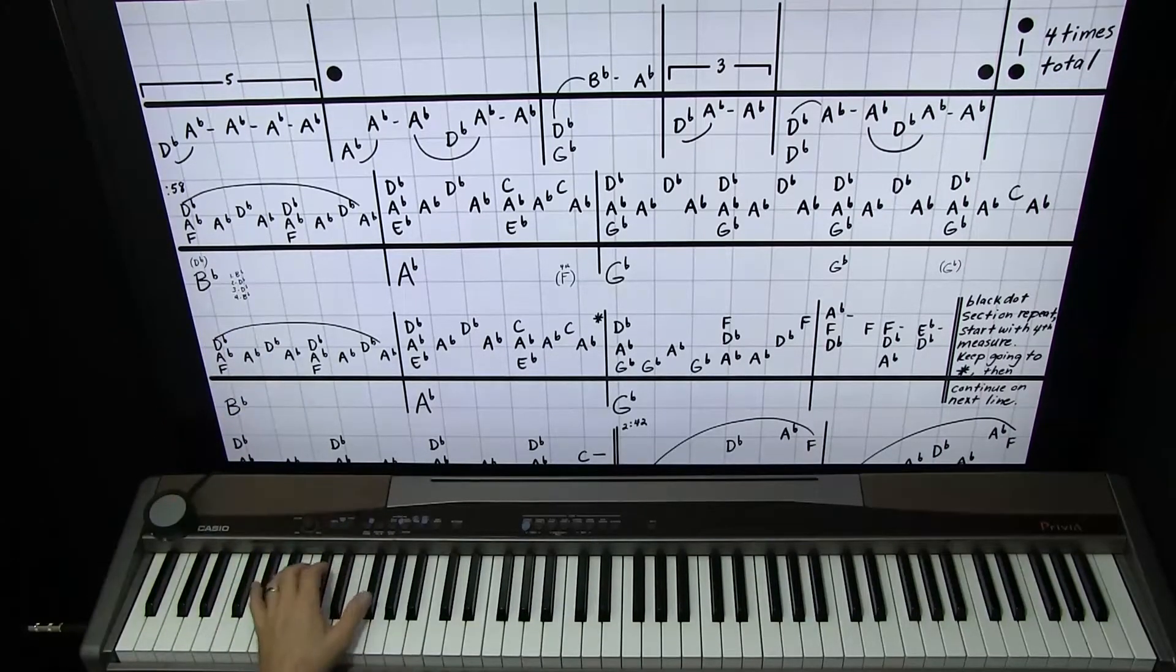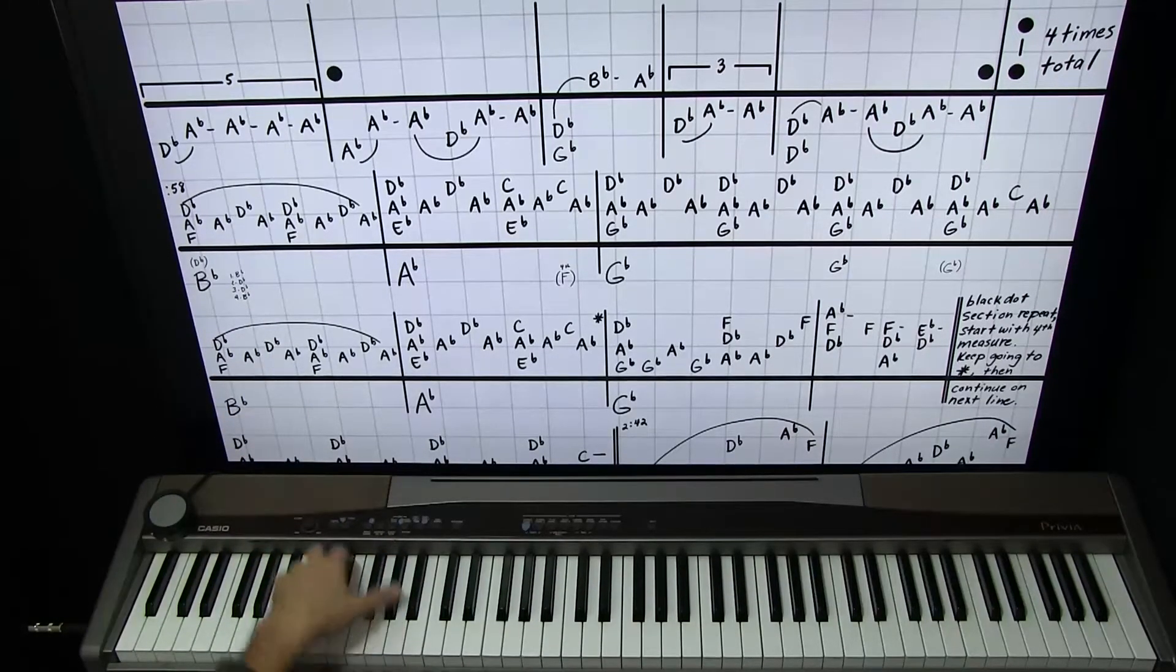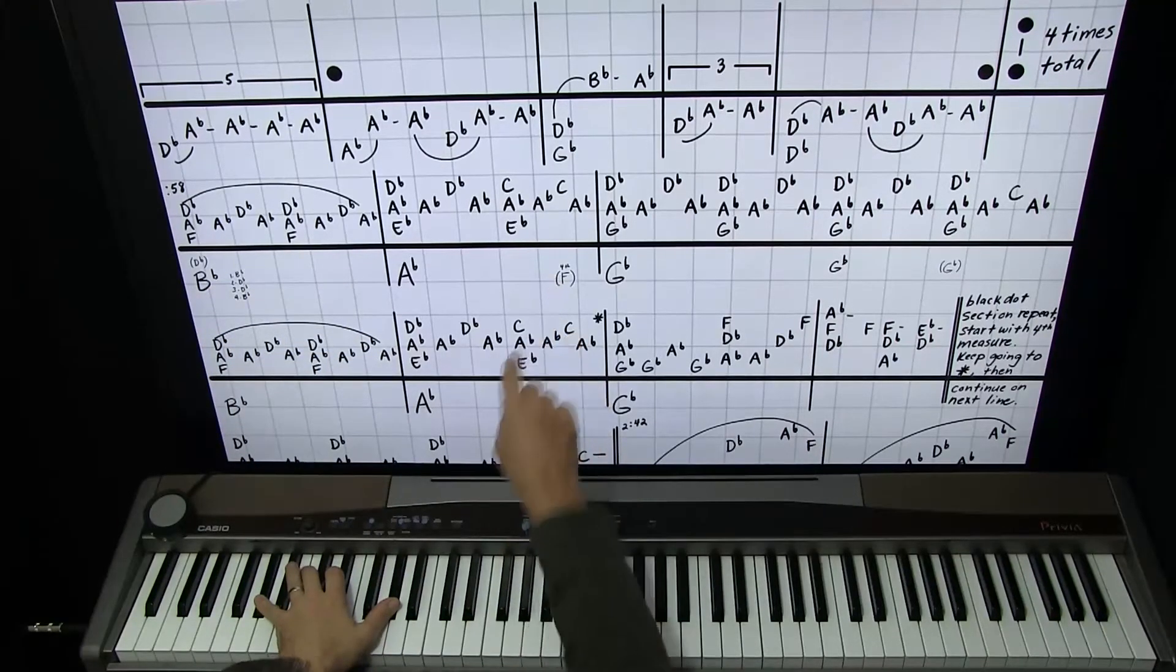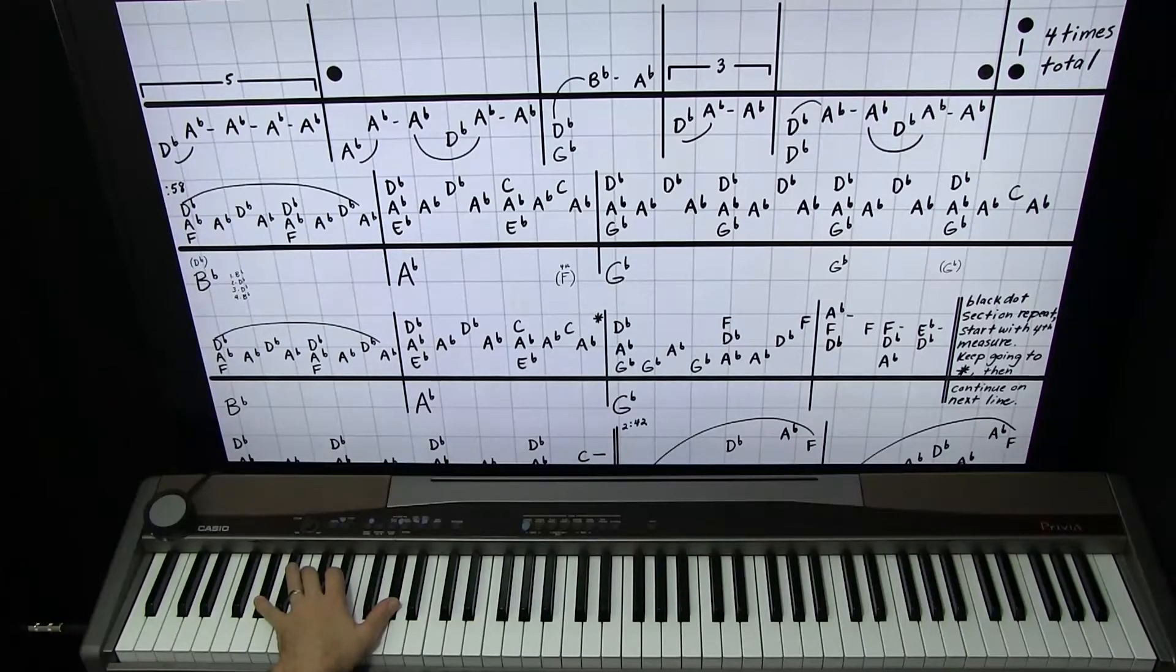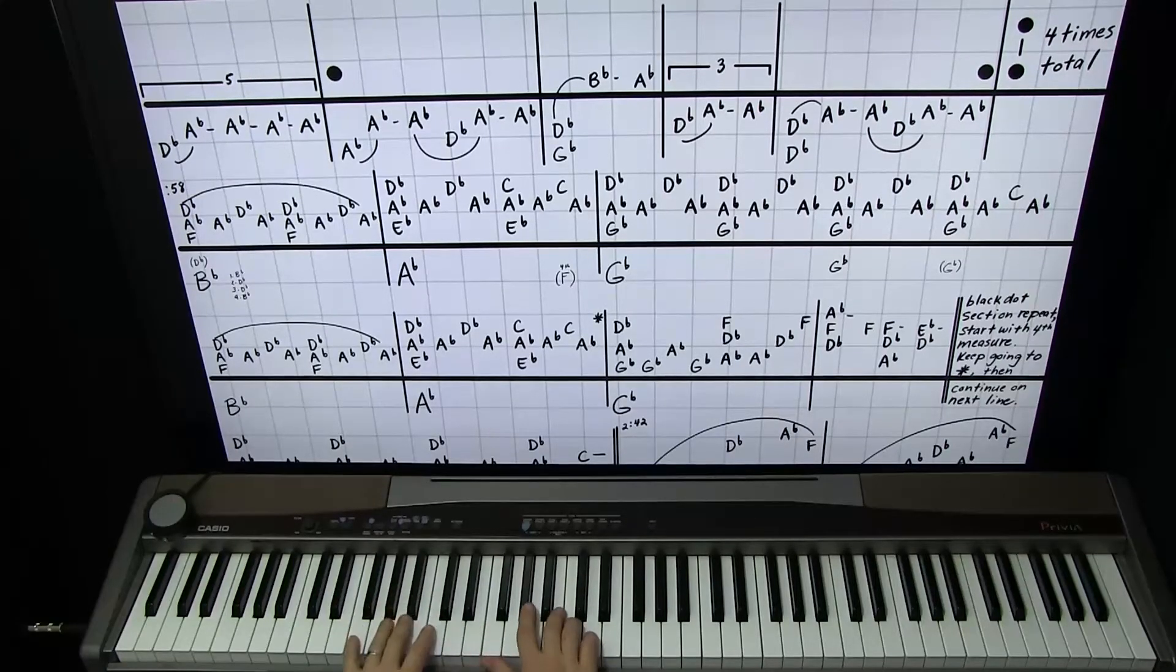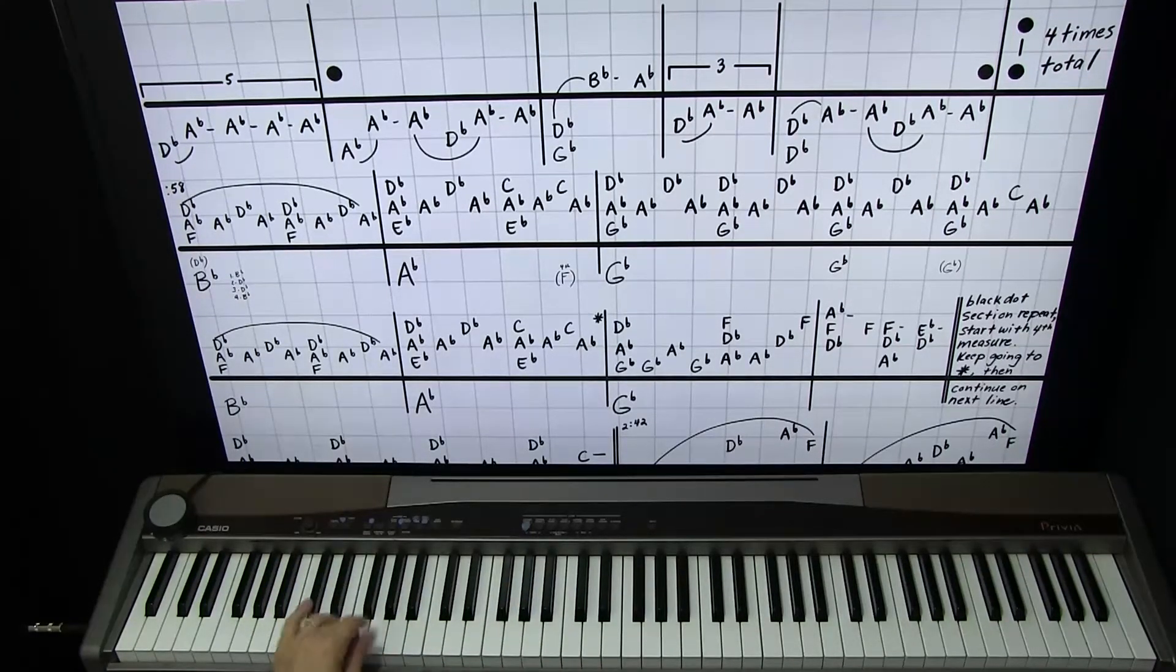Okay? So the right hand just continues with the eighth note or sixteenth notes, however you're counting it. Sixteenths, I think. Left hand. All right. The first time through, give me a B flat octave. And then we'll do A flat.